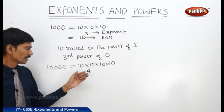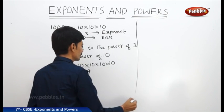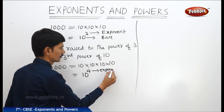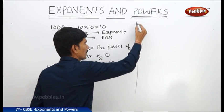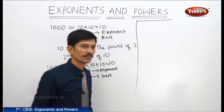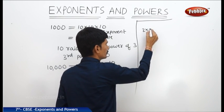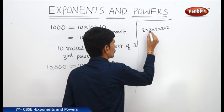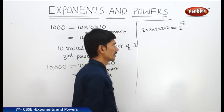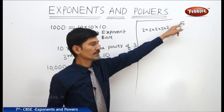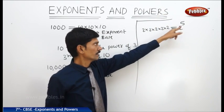This is read as '10 raised to the power of 4' or the '4th power of 10.' There are other numbers with bases other than 10. For example, if 2 is multiplied 5 times — 2 × 2 × 2 × 2 × 2 — this can be written as 2 to the power of 5. Here, 2 is called the base and 5 is called the exponent. This is read as '2 raised to the power of 5' or the '5th power of 2.'